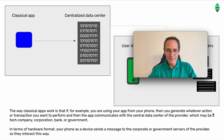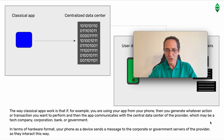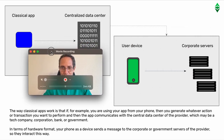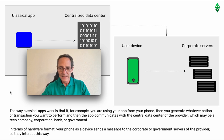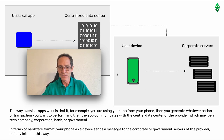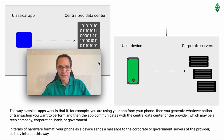The way classical apps work is that if, for example, you are using your app from your phone, you generate whatever action or transaction you want to perform, and then the app communicates with the central data center of the provider, which may be a tech company, corporation, bank, or government. In terms of hardware, your phone as a device sends a message through the internet to the corporate or government servers in a data center of the provider.